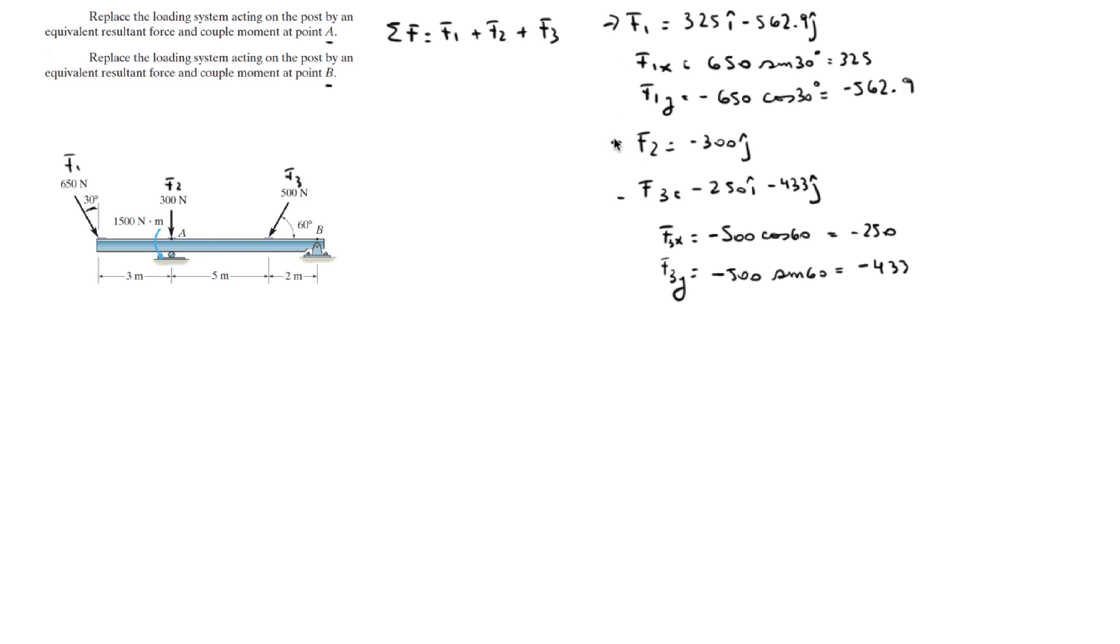Now that we have the Cartesian vector form of F1, F2, and F3, you can add the i's with the i's, the j's with the j's to get the resultant force, which comes out to be 75i minus 1295.9j.